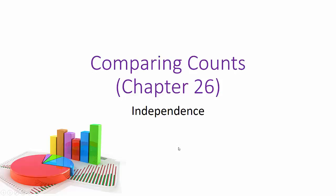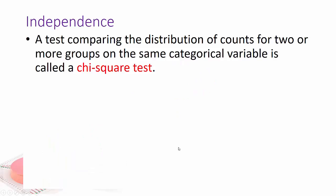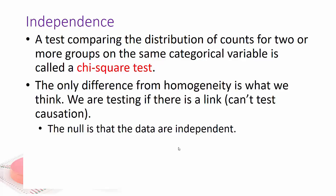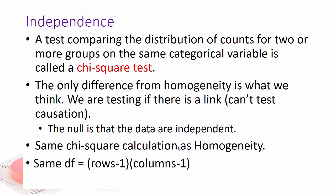Now we're going to look at the chi-square test for independence. And what is that? It's still basically the same as the chi-square test. We're comparing distribution of counts for two or more groups on the same categorical variable. The only difference from homogeneity is basically what we think. We're testing if there's a link. So the null is that the data are independent. We have the same chi-square calculation as homogeneity, and we have the same degrees of freedom.